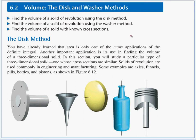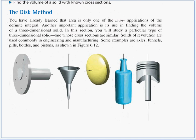We have already learned that area is only one of the many applications of the definite integral. Another important application is finding the volume of a 3D solid. In this section we study a particular type of solid whose cross sections are similar. Solids of revolution are used commonly in engineering and manufacturing — examples include axles, funnels, pills, bottles, and pistons. Each shape has a line running through it called the axis of rotation; we take a radius and rotate it around that axis to create these shapes.